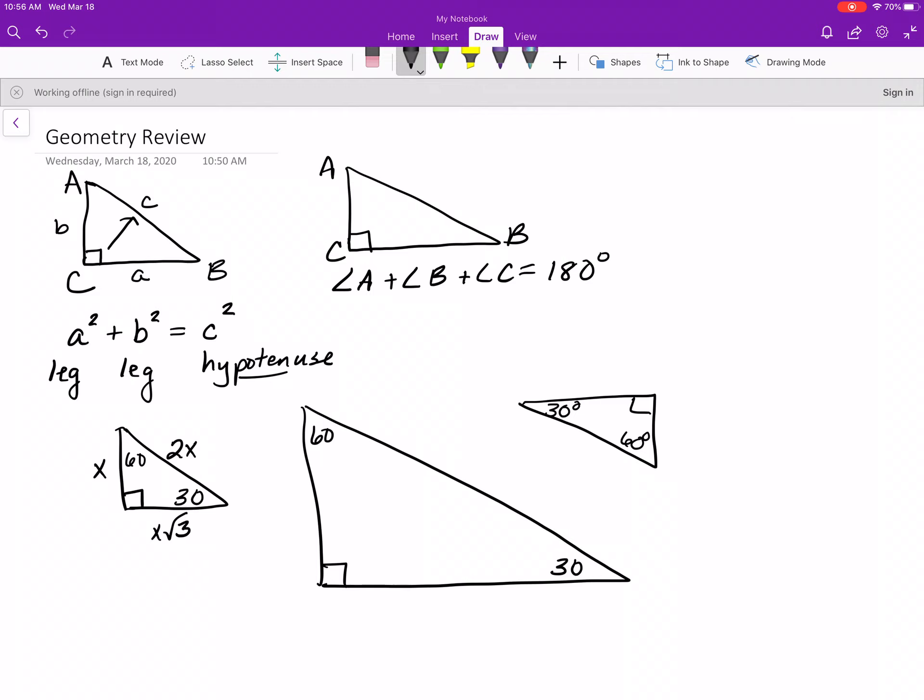So you could have something, say for example, that across from the 30 degree angle you had 5. If that's your base, you call that x, then the hypotenuse is always going to be twice that, so it would be 10. And then the side across from the 60 degree angle would be 5, or whatever the base is, x, times the square root of 3.